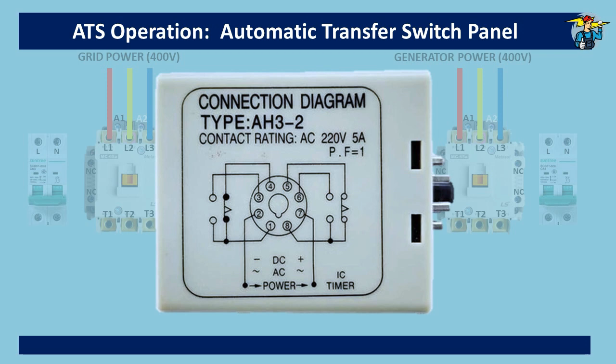AC or DC power is connected to points 2 and 7. Points 1 and 8 are the double pole input points — the common points — as indicated by the first two letters of DPDT. Points 3 and 4, and points 5 and 6, are the double-throw outlet points of ports 1 and 8 respectively.